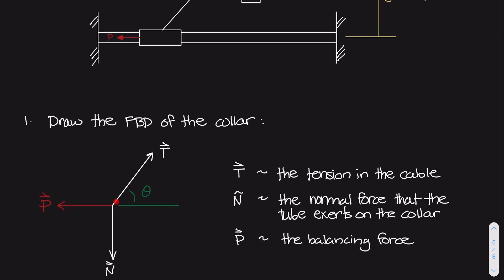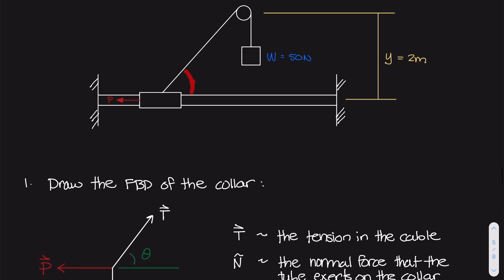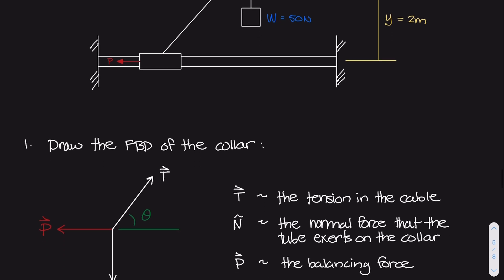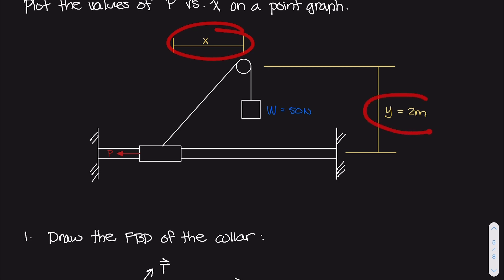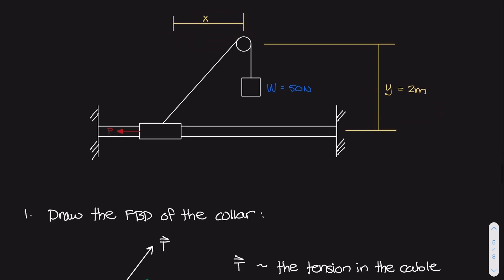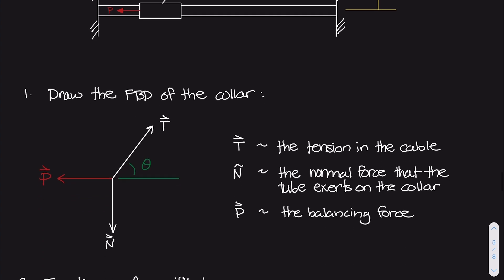Here's the free body diagram. If we model that collar as a particle, you have the tension force from the cable labeled T, the external force P acting to the left, and the normal force from the bar keeping the collar from going upward. This tension vector is going up and to the right at some angle theta. We don't know exactly what that angle is, but we do have the x distance and the y distance, which we'll use to find the x and y components of the tension force.